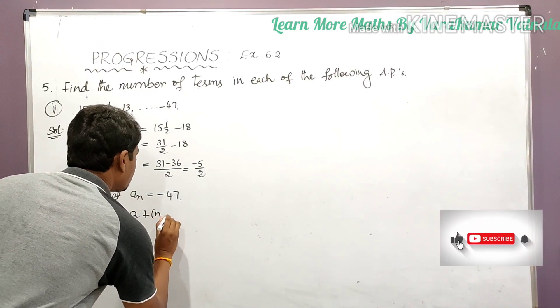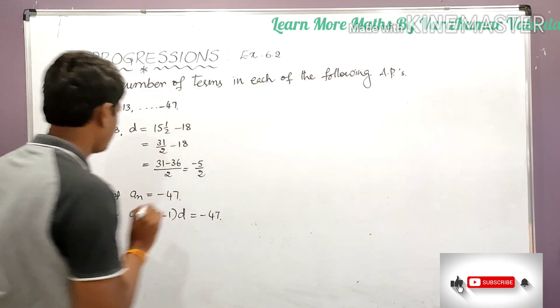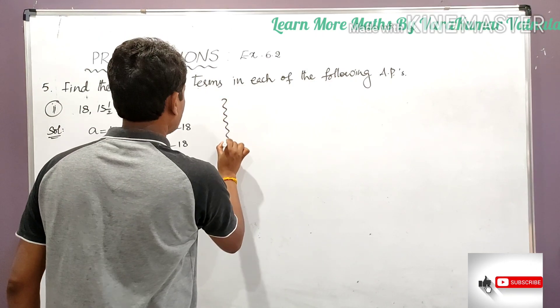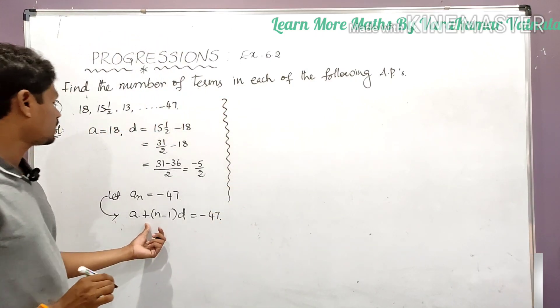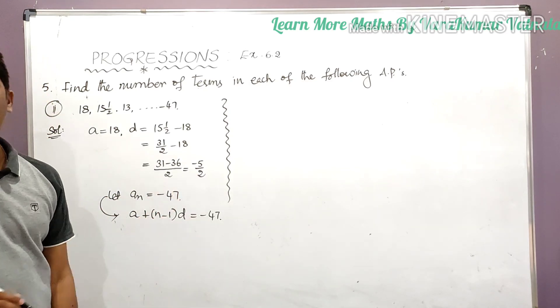a plus (n minus 1) into d is equal to minus 47. So simply substitute, we have a and d values here.